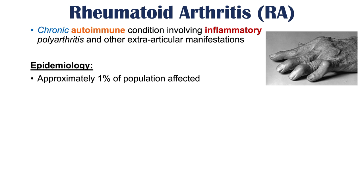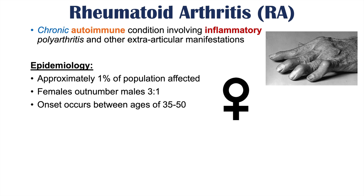The epidemiology reveals that rheumatoid arthritis affects approximately 1% of the general population, and females are affected more often than males — they outnumber males approximately 3 to 1. The onset of this condition occurs between the ages of 35 and 50.